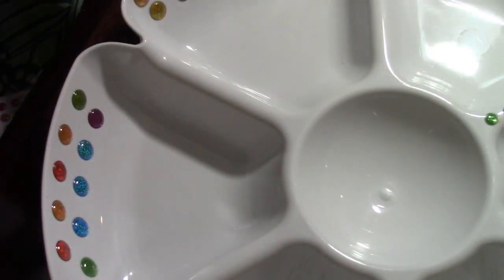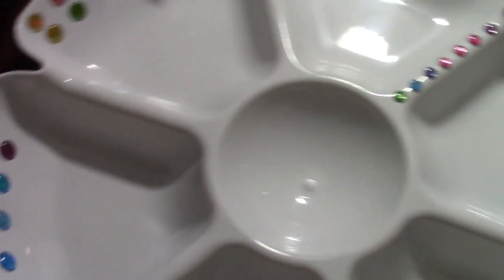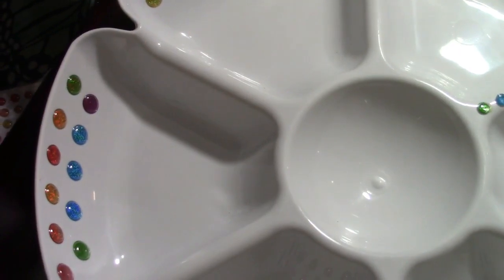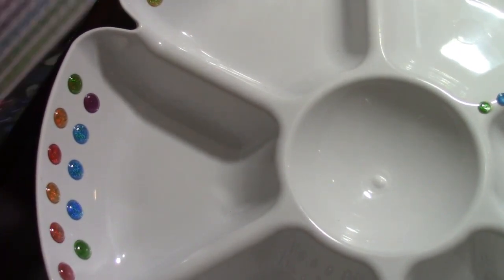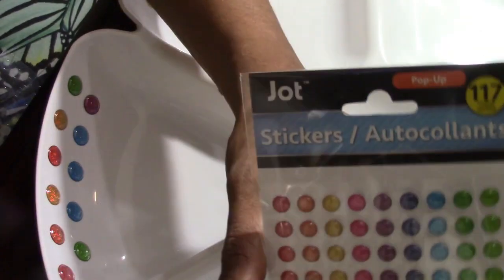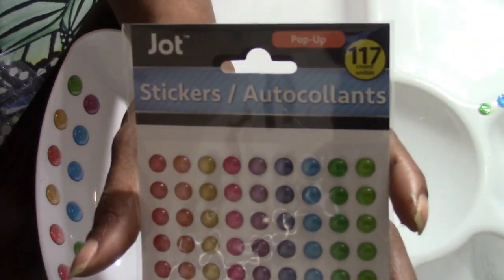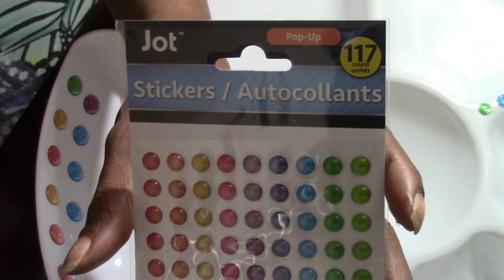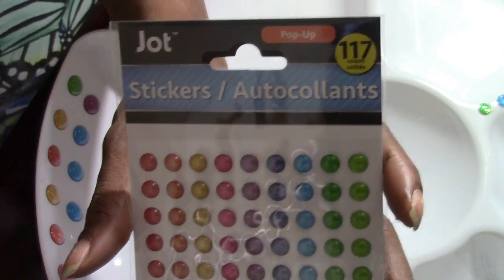Okay guys, for the next step I'm going to be taking my smaller bubble stickers by Jot and I'm going to be placing them right on these, I don't know what you would call those, the little ridges. The smaller Jot bubble stickers or pop-up stickers are 117 count.